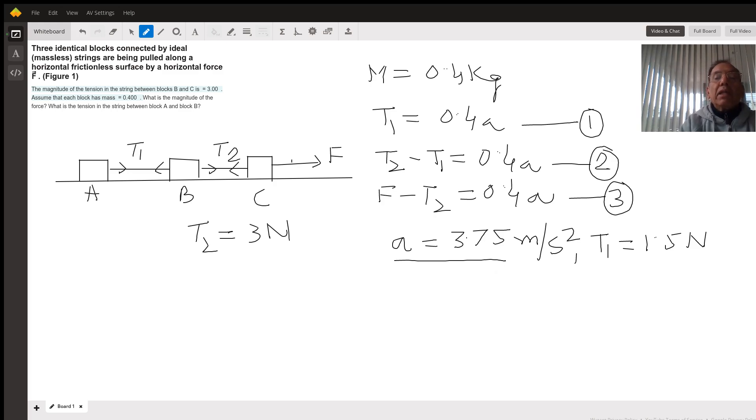Plugging in the acceleration value, we get the tension in the first string between A and B as 1.5 Newtons.